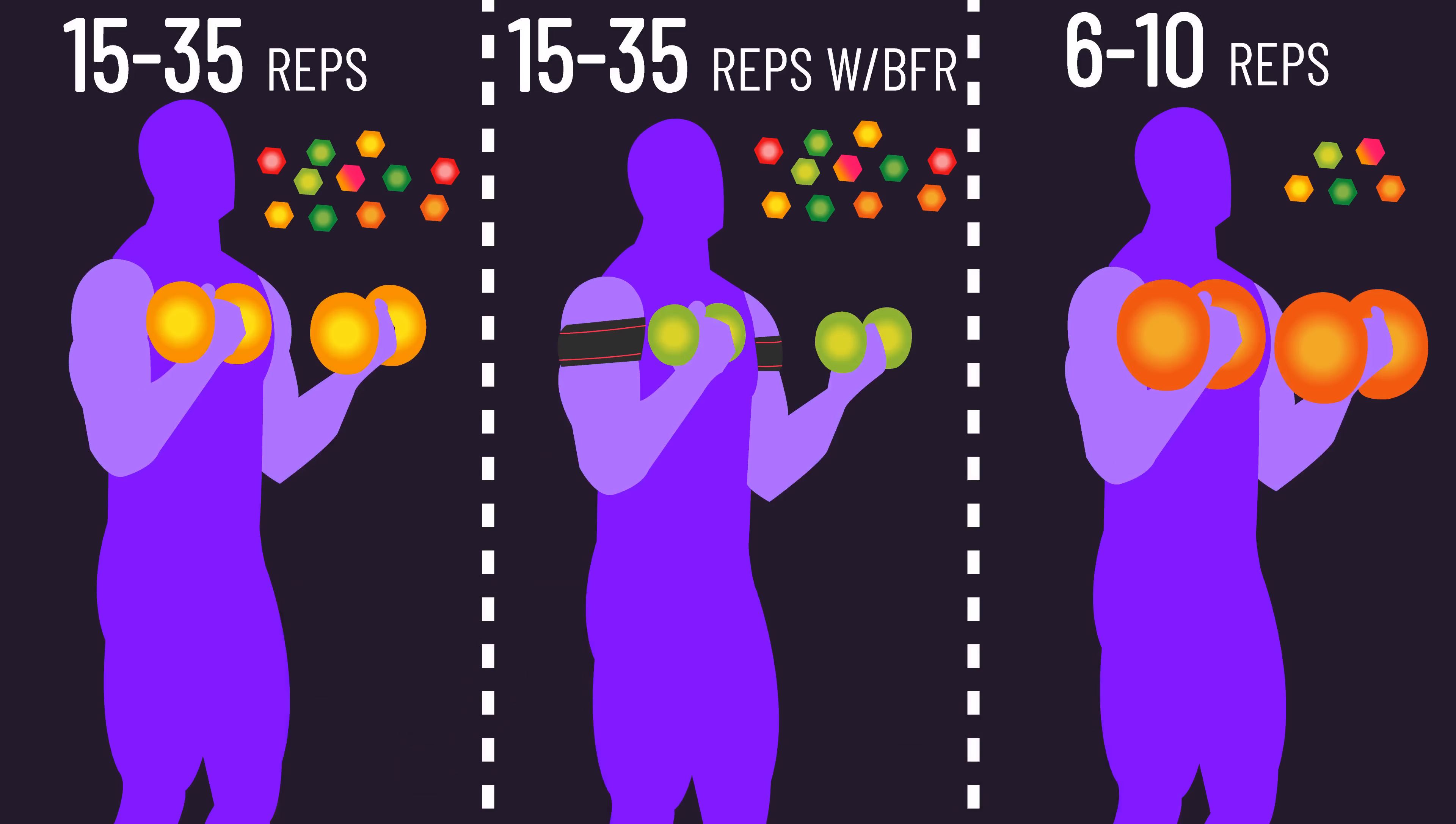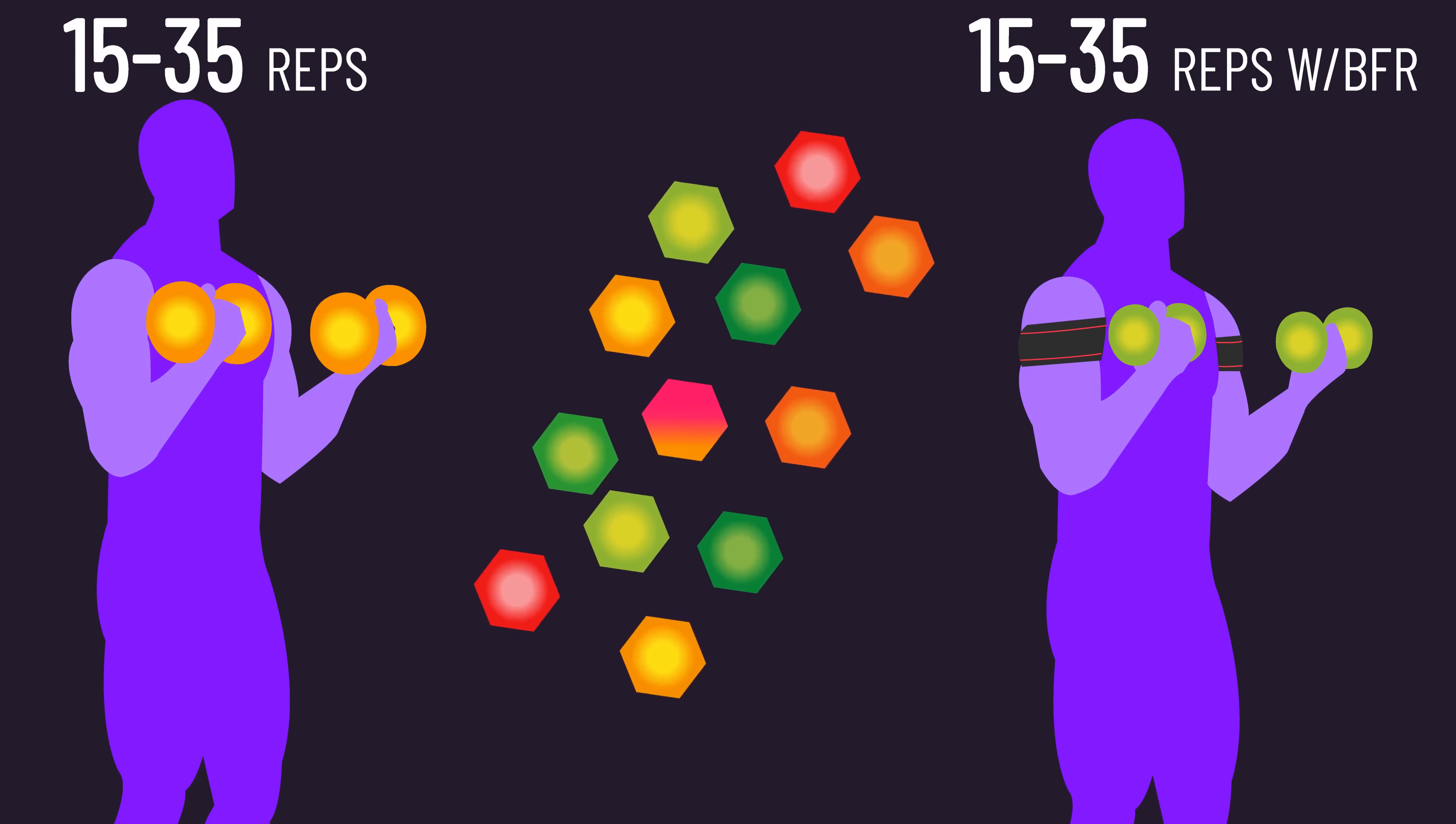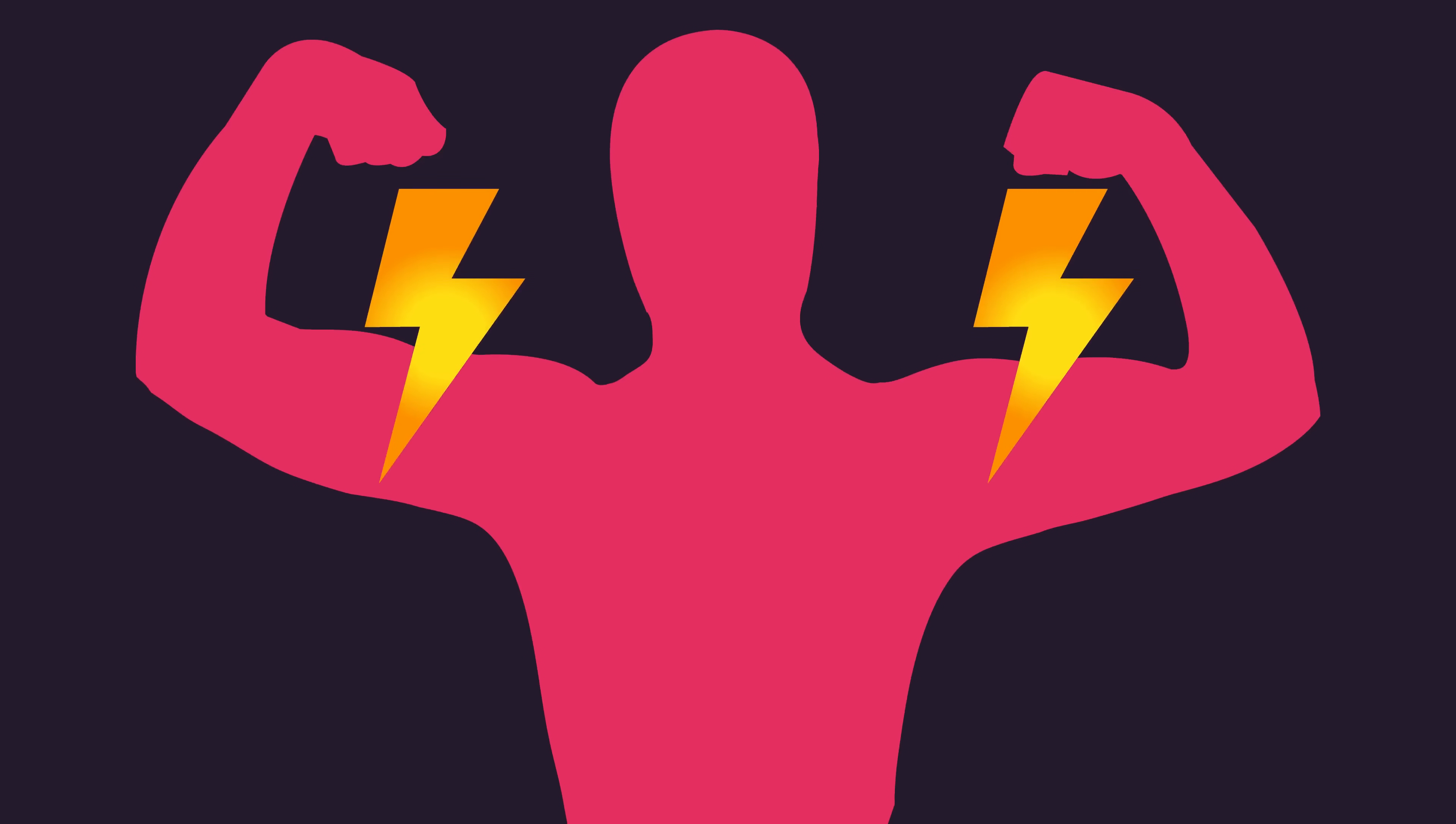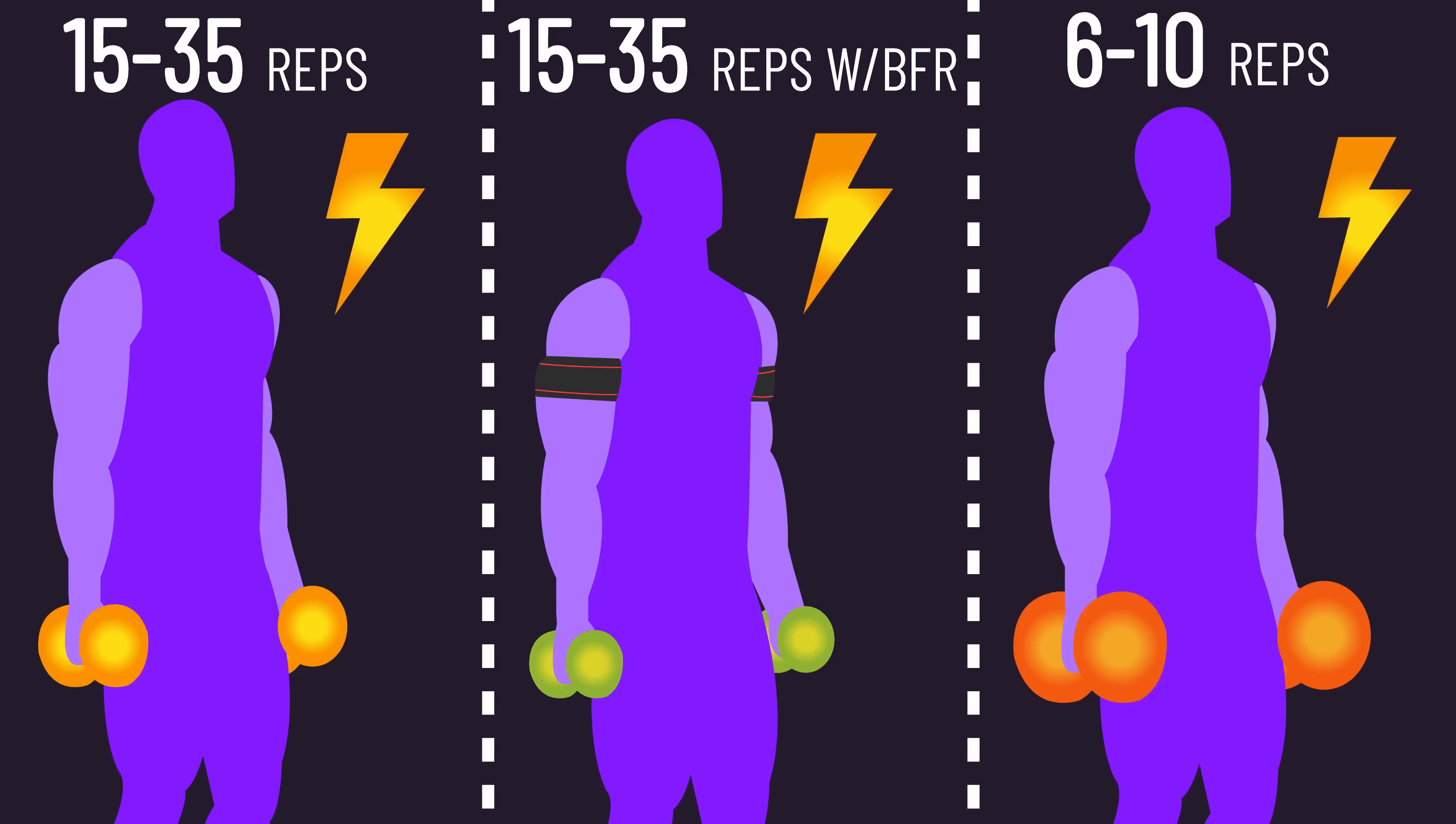Some may think though hypertrophy is similar between these, the growth stimuli differ between them. Namely, higher reps and blood flow restriction cause muscle growth through metabolite buildup, while lower rep training causes muscle growth through mechanical tension. But as discussed in a great 2017 review from the USA, this is most likely false. Mechanical tension seems to be the most powerful driver of muscle hypertrophy, and it's very likely blood flow restriction, higher reps, and lower reps all cause similar mechanical tension, thus explaining the similar hypertrophy.